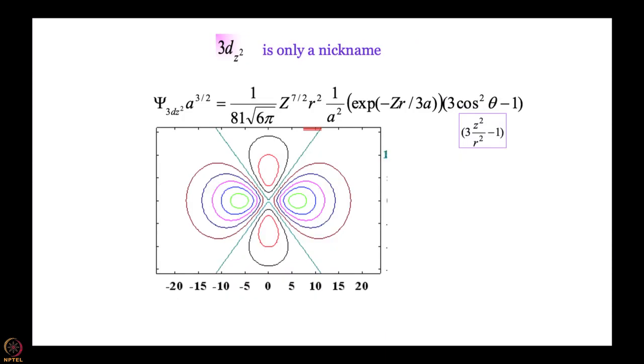To conclude this discussion, let me say that 3d z square is actually a nickname. Why? Because the way we are written it here, we have not really converted completely to Cartesian coordinates. Z square by r square is there, so if we want to convert completely to Cartesian coordinates you should remember that r square is x square plus y square plus z square. So when you substitute that and equate to 0, we get 2 z square minus x square minus y square equal to 0. So the full label of 3d z square is really 3d 2 z square minus x square minus y square. This comes handy when you try to discuss things like d orbital splitting in an octahedral field or whatever field it is using symmetry, using what are called character tables. So it is important to understand what these names mean.